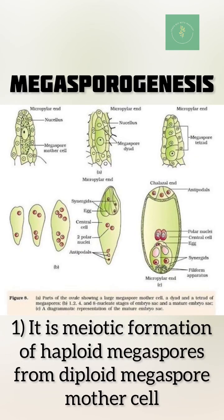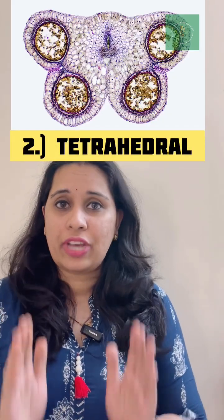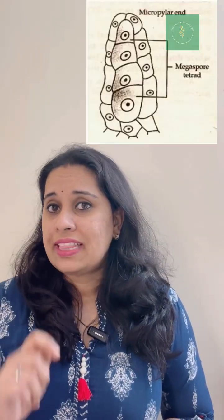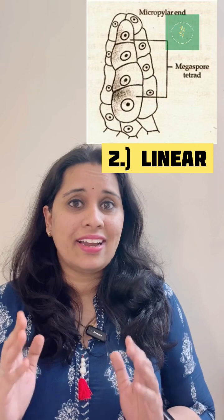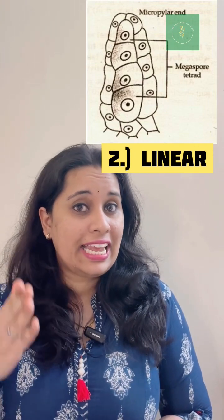What is megasporogenesis? It is the meiotic formation of haploid megaspores from a diploid megaspore mother cell. In microsporogenesis, the arrangement of microspores in a tetrad is generally tetrahedral, whereas in megasporogenesis the megaspore arrangement in a tetrad is generally linear.